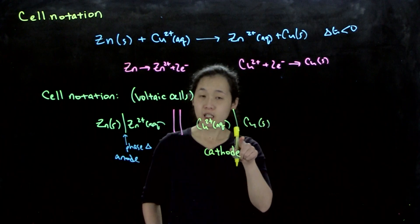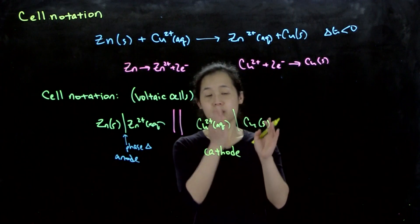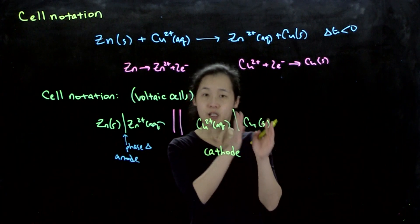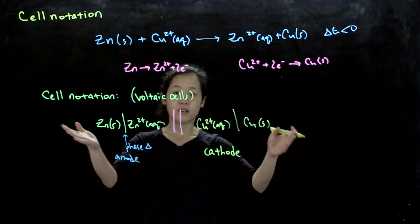Again, there's a vertical line here because copper 2+ is in solution and then copper solid (copper zero) is our electrode. That's how you express a voltaic cell.